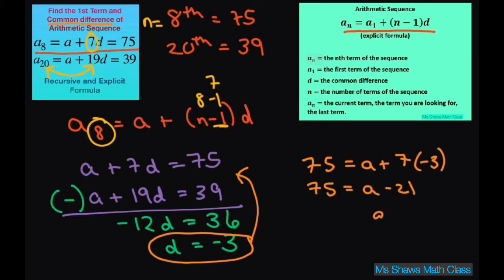Add 21 to both sides. So A is going to end up being 96. So now you've found your first term and your common difference just by a system of linear equations.